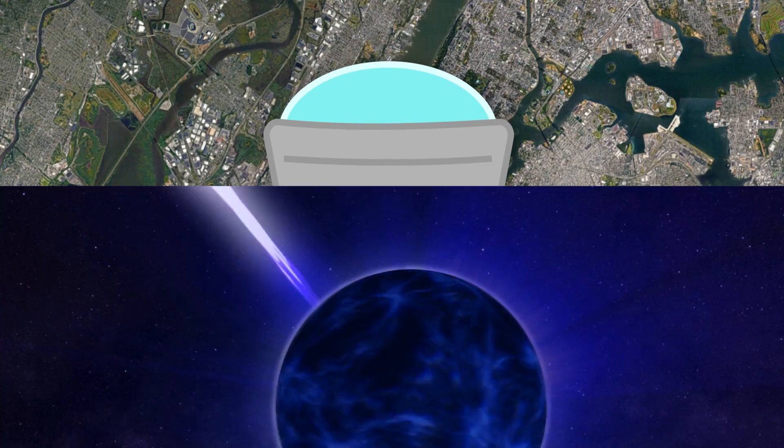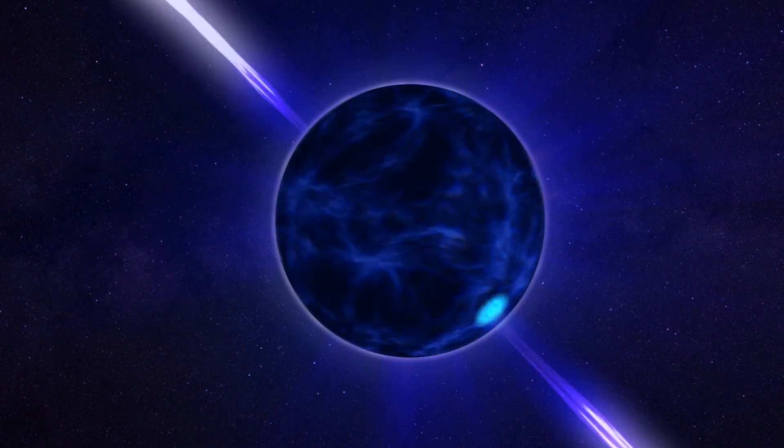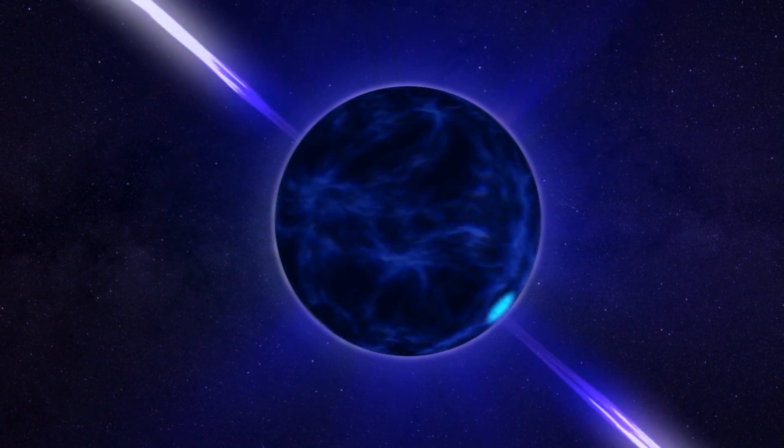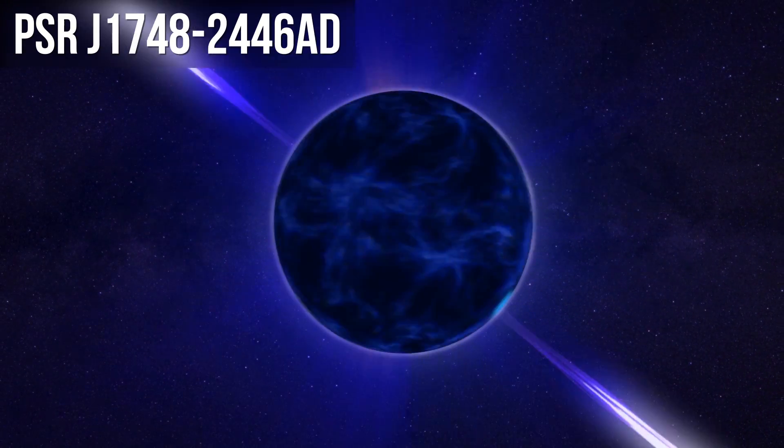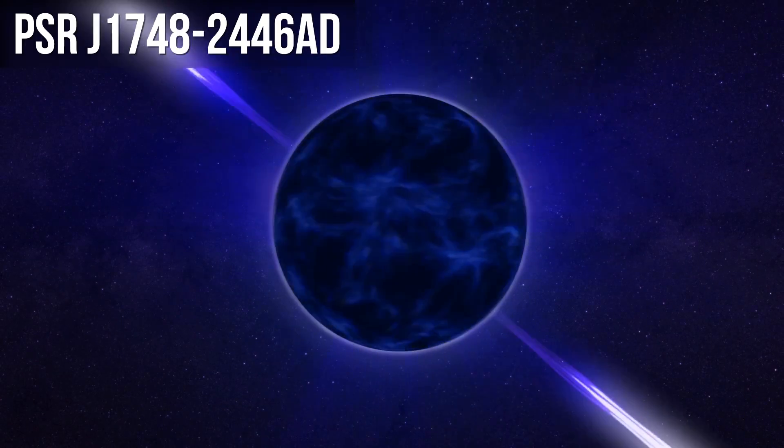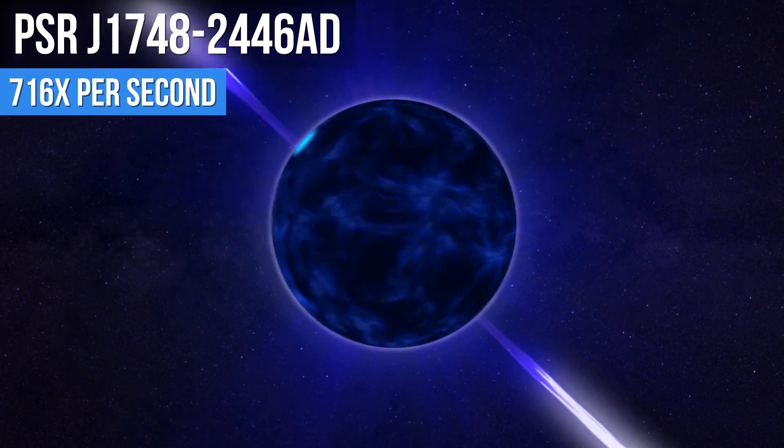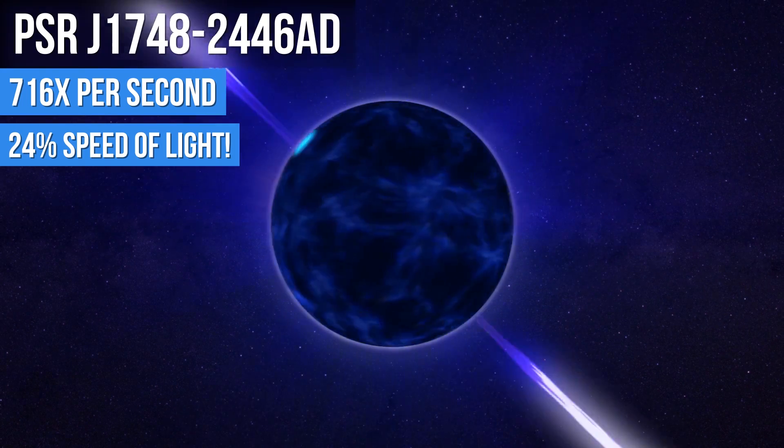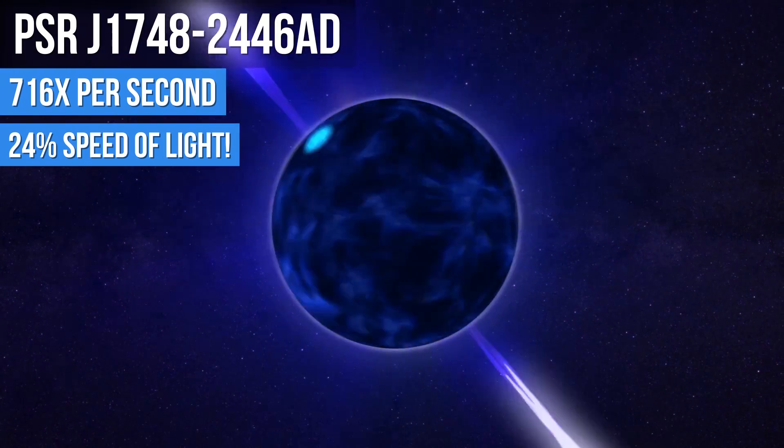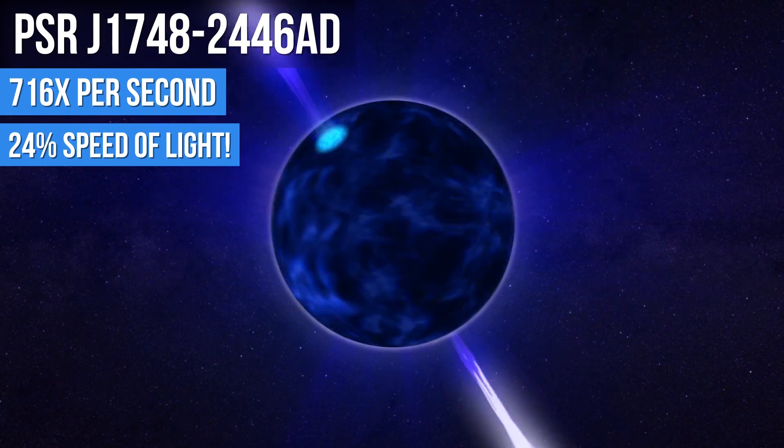Neutron stars also rotate incredibly quickly after they're formed, and the quickest one ever yet discovered is called PSR J1748-2446AD, which rotates 716 times every second, or about 24% of the speed of light at the surface.